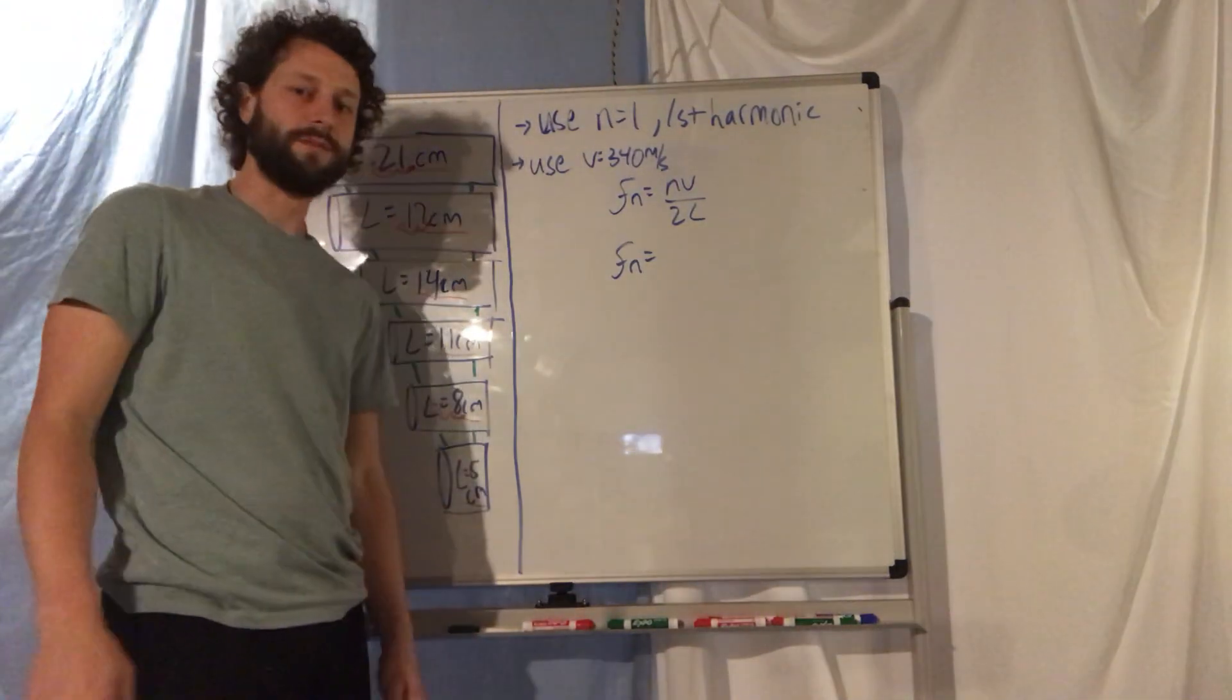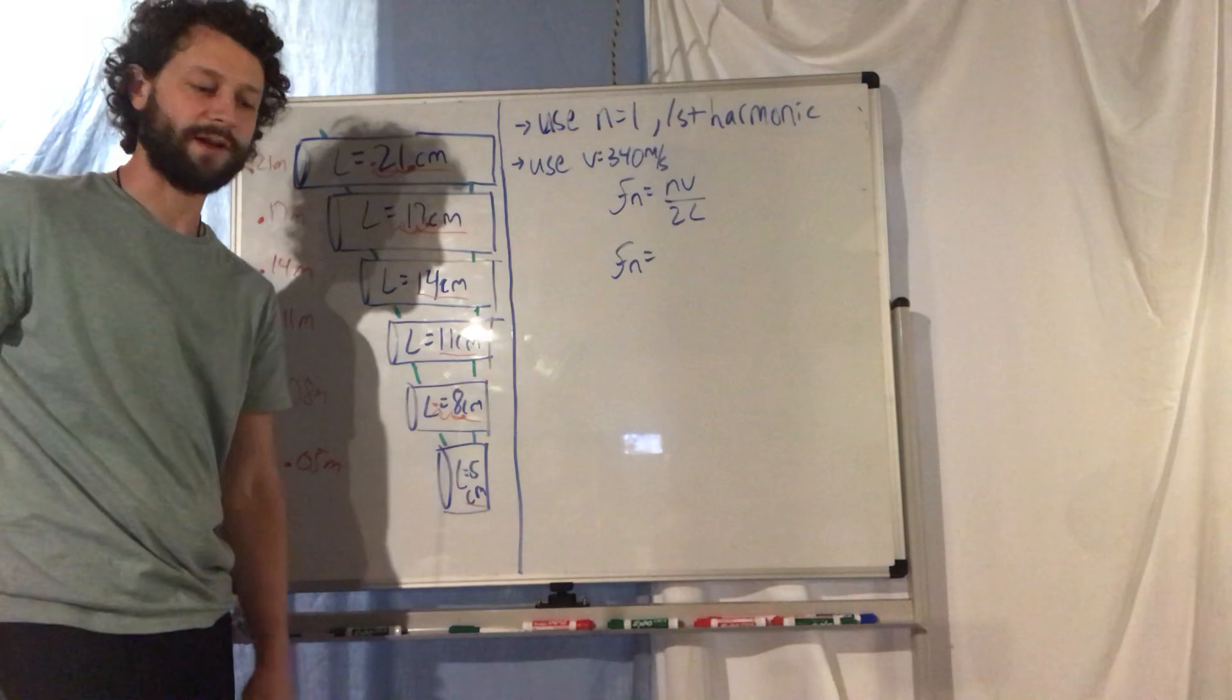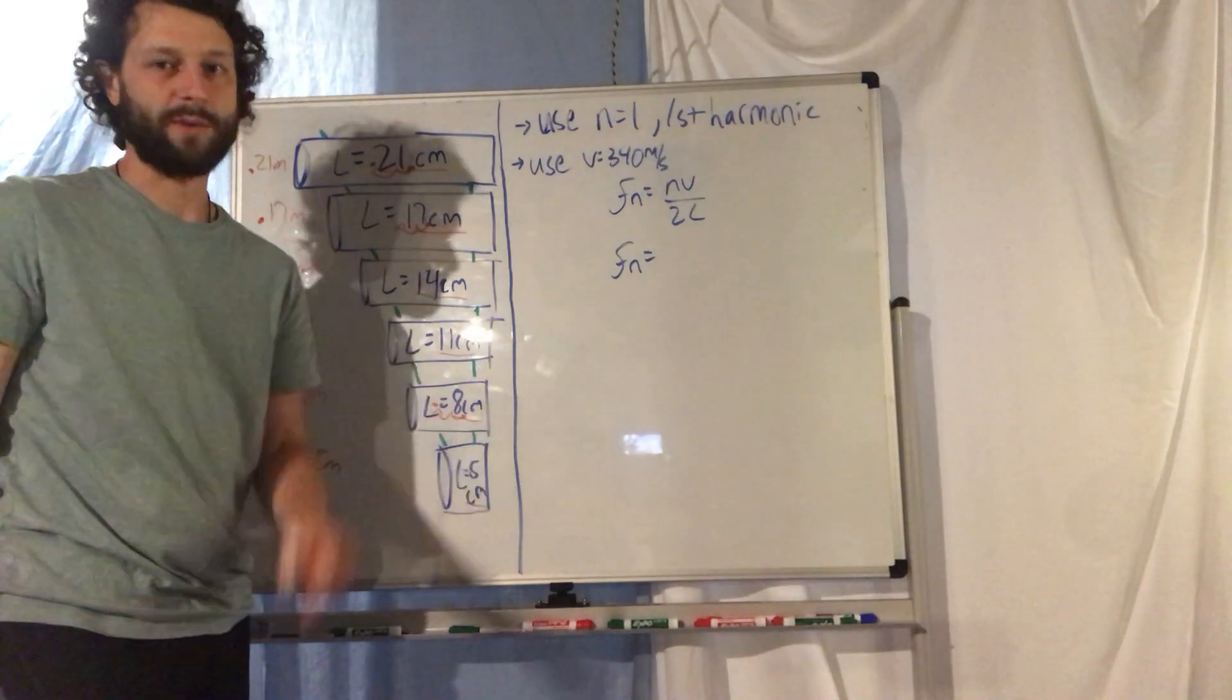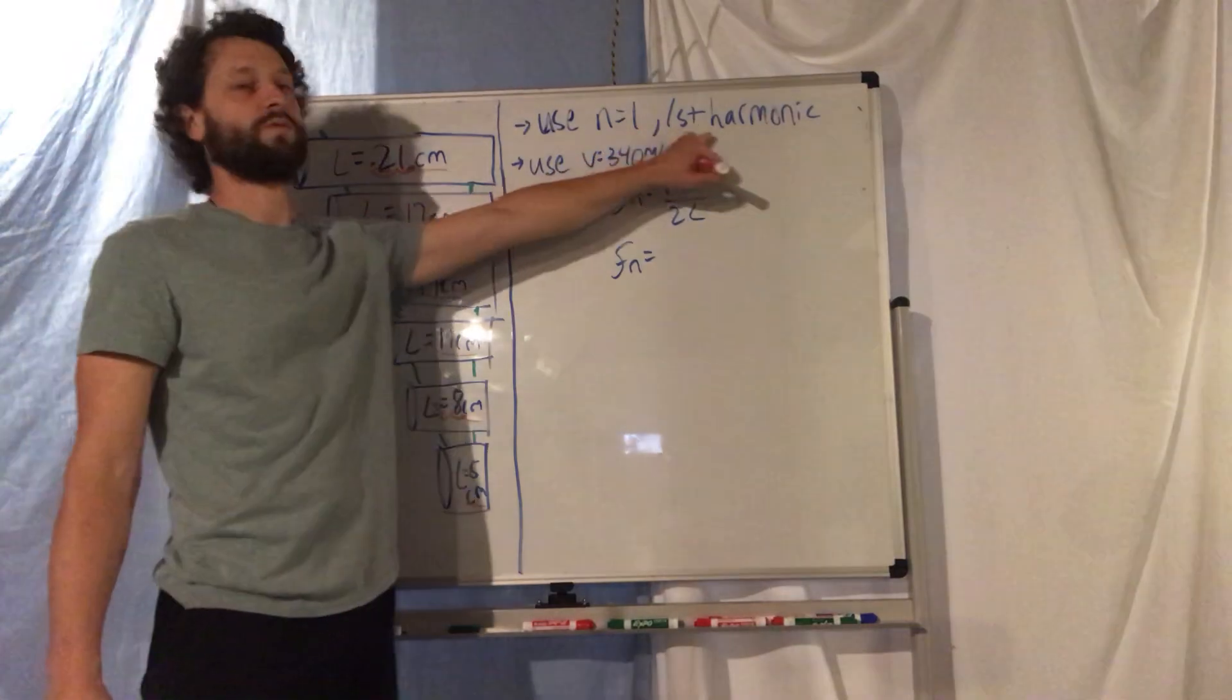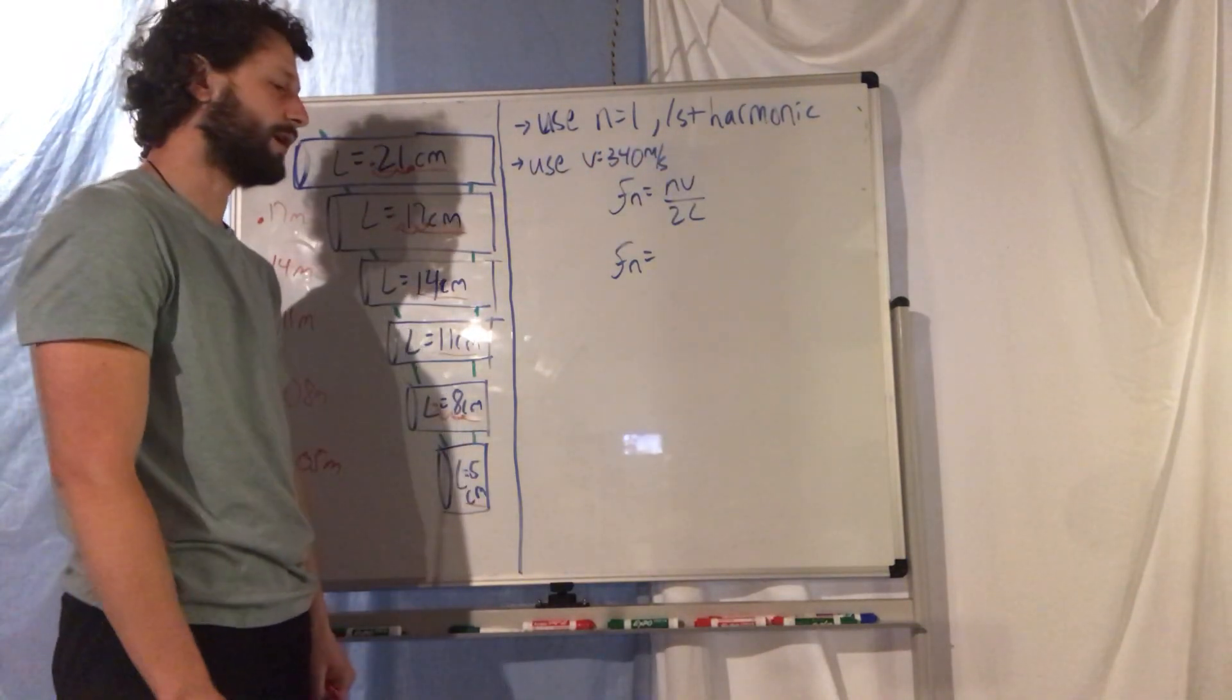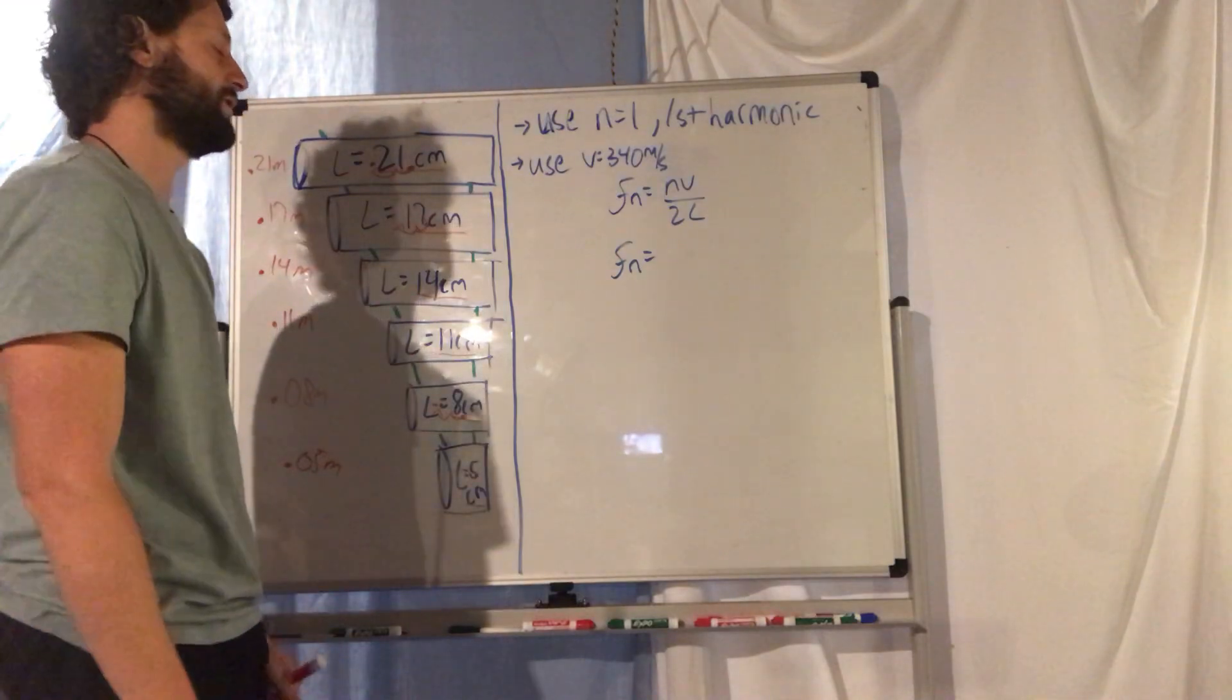When you tap one of your tubes, you're gonna hear more than one harmonic at the same time. You'll hear all the harmonics, but we're only gonna calculate the first harmonic we hear from each tube. So for each tube, we're gonna use n equals one for the first harmonic in our formula.